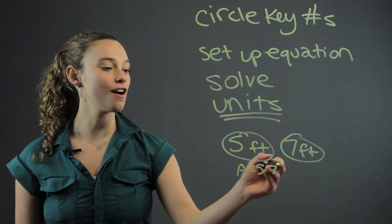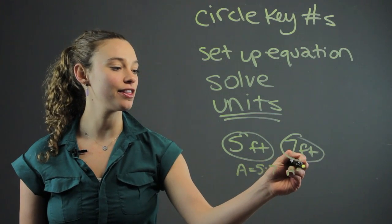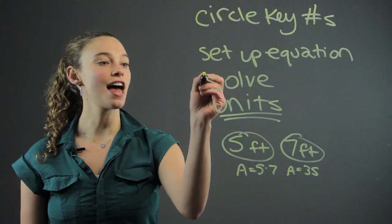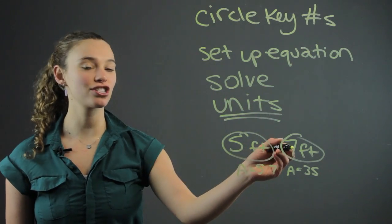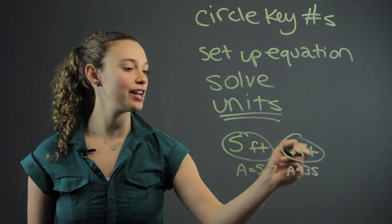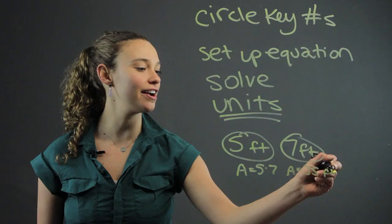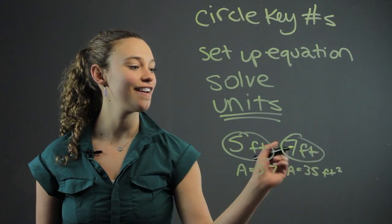Then have them solve that. A is going to equal 35. The final step is the units. Make sure they include the units. This is going to be feet, and because it's area, it's going to be squared: feet squared.